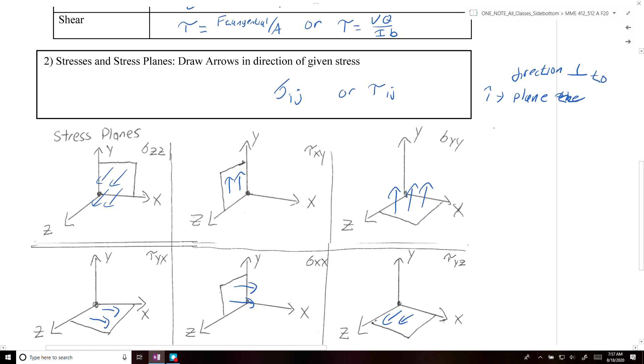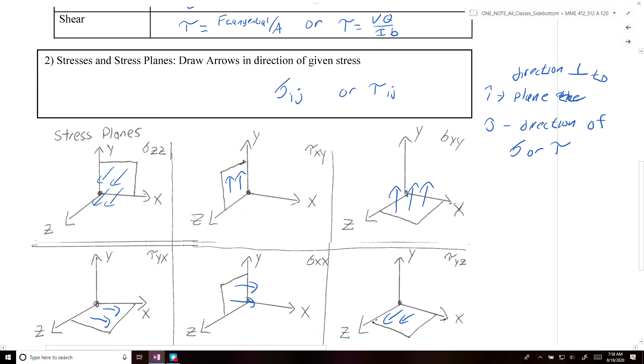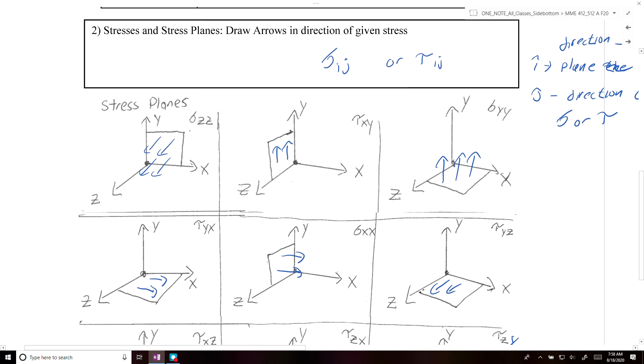And then the second one is the direction of your stress. So for sigma zz, the plane that we were given, the z-axis was normal to the plane, and then the direction of the stress would be along the z-axis. So there'd be a normal stress.